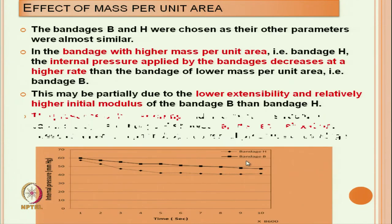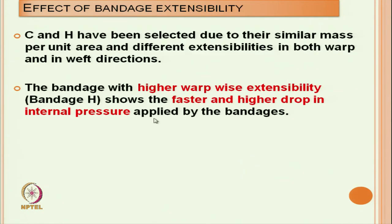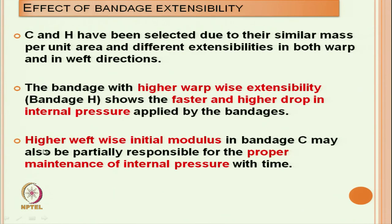That is why bandage H has got higher extensibility than bandage C, and that is why the pressure drop is higher in bandage H. Higher weft-wise initial modulus in bandage C may also be partially responsible for proper maintenance of initial pressure. So the weft-wise initial modulus was high for bandage C, and these two factors are responsible for maintaining the pressure.